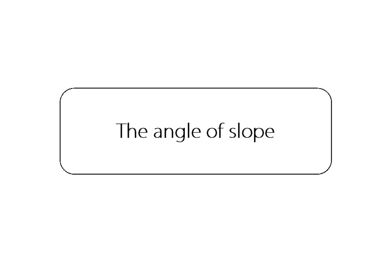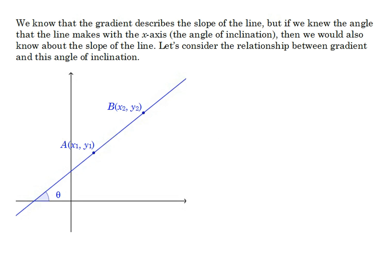The angle of slope. We've talked previously about gradient and how gradient is a way to describe the slope of a line, and it describes how y changes as x increases by 1. But obviously we could also describe the slope of a line by talking about the angle, the angle of inclination of the line. So what we want to look at here is how does this angle relate to the gradient? Because clearly they must be related. A particular gradient will make a particular angle with the x-axis.